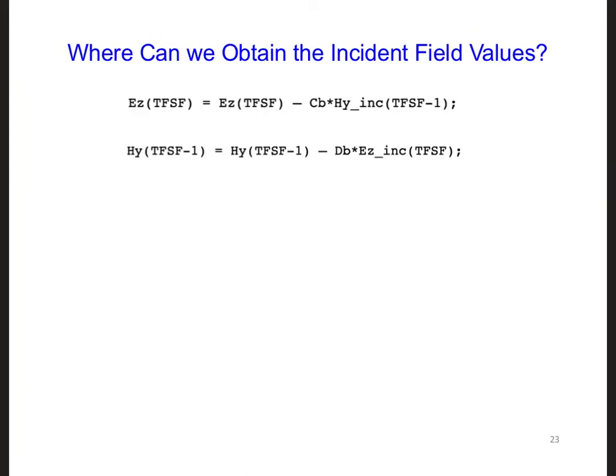Lastly, we need to figure out how to obtain the incident field values at the interfaces of the total and scattered field regions, and over all time steps, so that we can implement these corrections. These are for the left side of the grid.